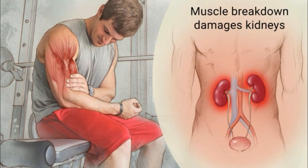Rhabdomyolysis is a disorder that involves rapid breakdown of skeletal muscle due to an injury. As a result, the components of the skeletal muscle cells are released into the bloodstream. These may include phosphate, potassium, and myoglobin. The protein myoglobin is found in the urine.